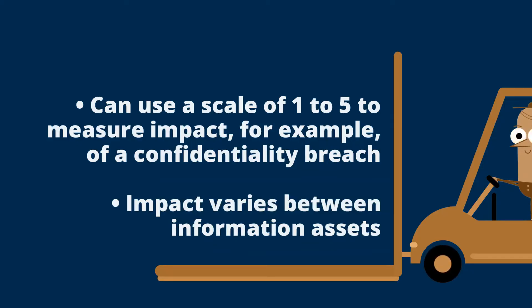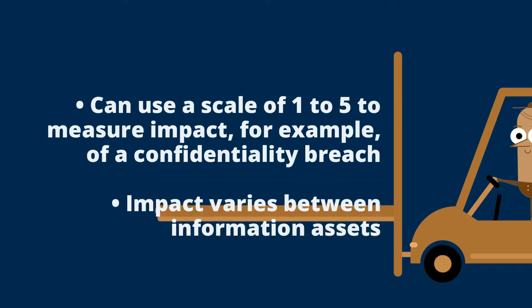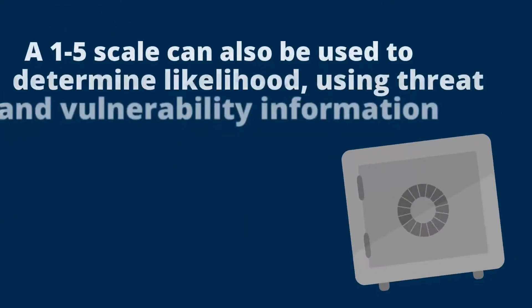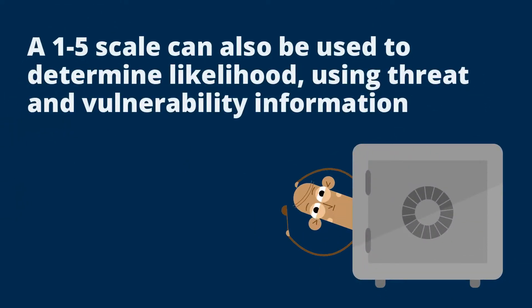One good idea is to use a set of scales to record values in these areas. For example, using a scale of one to five, we could assess how impactful it would be if the confidentiality of an asset were breached — clearly breaches of confidentiality would cause a greater impact for some assets, for example HR records, than others like the staff canteen menu. A second one-to-five scale could be used to determine the likelihood of a breach occurring, taking into consideration the threat and vulnerability information.